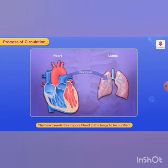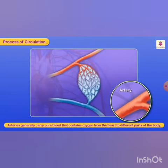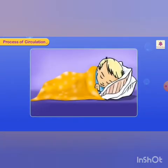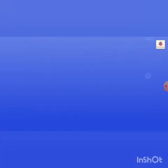Arteries generally carry pure blood that contains oxygen from the heart to different parts of the body. Veins usually carry impure blood that contains carbon dioxide back to the heart. This goes on continuously, even when you are sleeping.